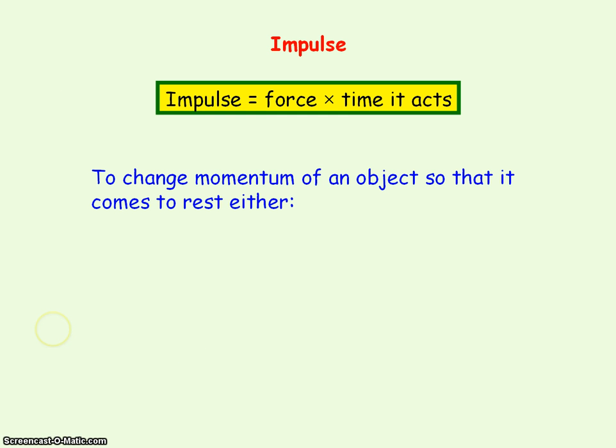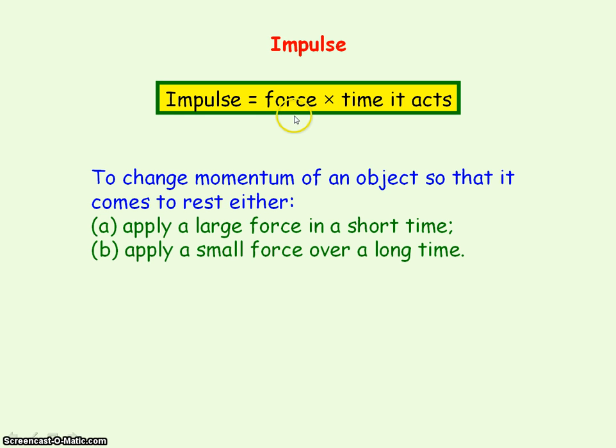To change the momentum of an object so that it comes to rest, you can either apply a large force in a short time or apply a small force in a longer time, so that they have the same impulse, the same change in momentum.